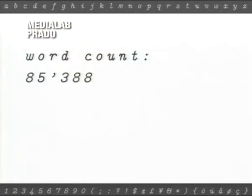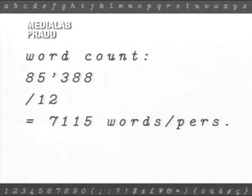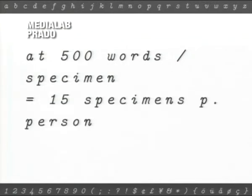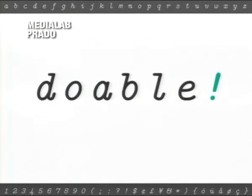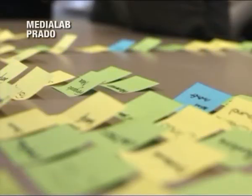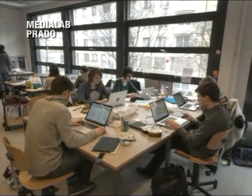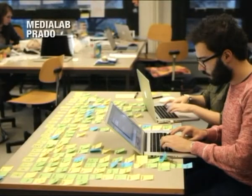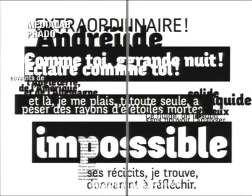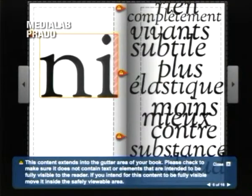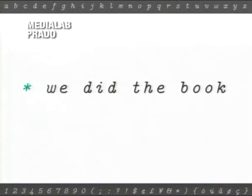The word count was quite a lot, so we had to check feasibility. We divided by the number of people and estimated the number of words per specimen — about 15 specimens per person, maybe a bit more — doable. The real sprint started, with a lot of work on little sticky notes. Those are the names of the fonts, labeled by color for serif, sans, and mono. Students also did some personal creative specimens, though some had to be dropped because Amazon didn't validate them.